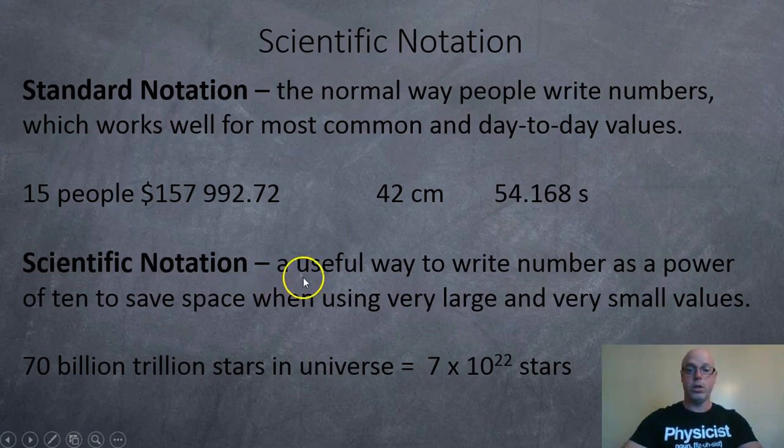Scientific notation is a useful way to write numbers as a power of 10 to save space when using very large and very small values. For example, there's approximately 70 billion trillion stars in the universe. That's around 7 times 10 to the power of 22 stars.